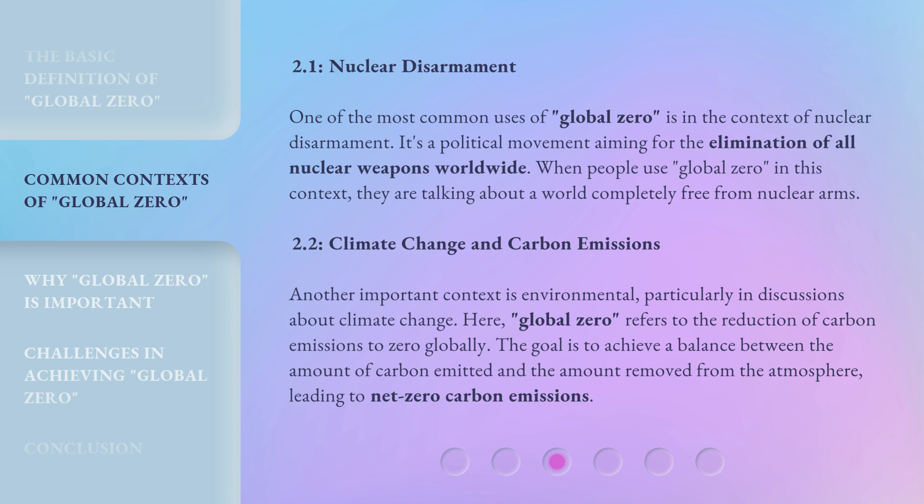2.2 Climate Change and Carbon Emissions. Another important context is environmental, particularly in discussions about climate change. Here, Global Zero refers to the reduction of carbon emissions to zero globally. The goal is to achieve a balance between the amount of carbon emitted and the amount removed from the atmosphere, leading to net zero carbon emissions.